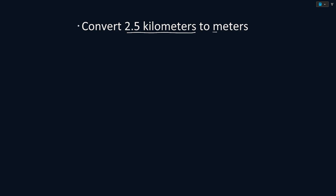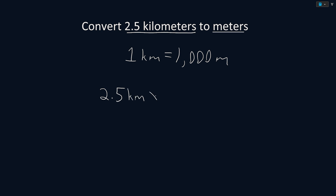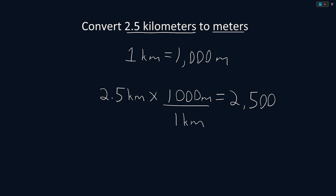Convert 2.5 kilometers to meters. We know that 1 kilometer is equal to 1,000 meters. So to write our conversion factor, we start with the units that we were given, 2.5 kilometers, then multiply by a fraction that will cancel out our units. We will put the meters on top and the kilometers on the bottom. Solving this equation, we get that 2.5 kilometers is equal to 2,500 meters.